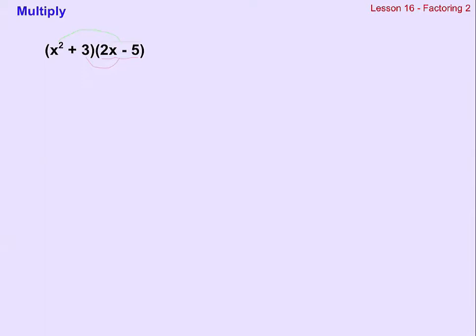The only way to undo multiplication is to do the multiplication. So here are two binomials, x squared plus 3 times 2x minus 5. Notice that they're not both linear. That's going to make a difference. Notice that we've got this x squared here.